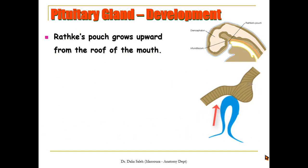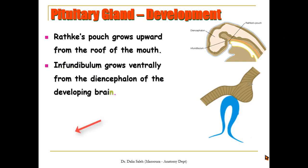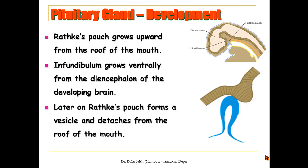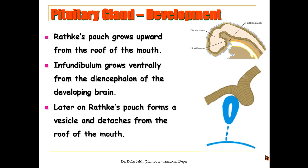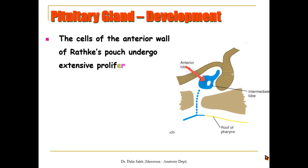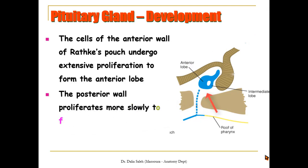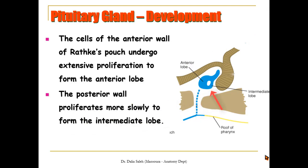First, Rathke's pouch grows upward from the roof of the mouth, and the infundibulum grows ventrally from the diencephalon of the developing brain. Later on, Rathke's pouch forms a vesicle and it detaches from the roof of the mouth — its stalk narrows and finally detaches. The cells of the anterior wall of Rathke's pouch undergo extensive proliferation and form the anterior lobe of the pituitary gland, while its posterior wall proliferates more slowly to form the intermediate lobe.